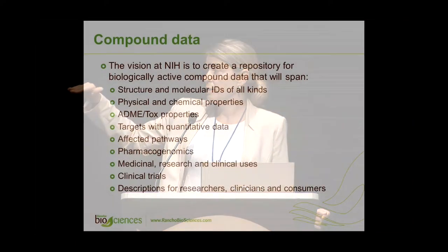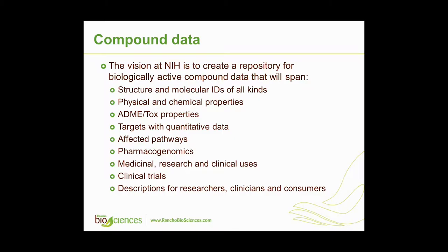In this repository, for all compounds, data will be available covering several categories: starting with IDs and structure, then physical and ADME properties, then targets and affected pathways. If pharmacogenomics data is available, it will be included. By linking with clinical trial repository information, you'd know which compounds were tested and what the results were. Descriptions are also planned for three categories of consumers: researchers, clinicians, and general public.